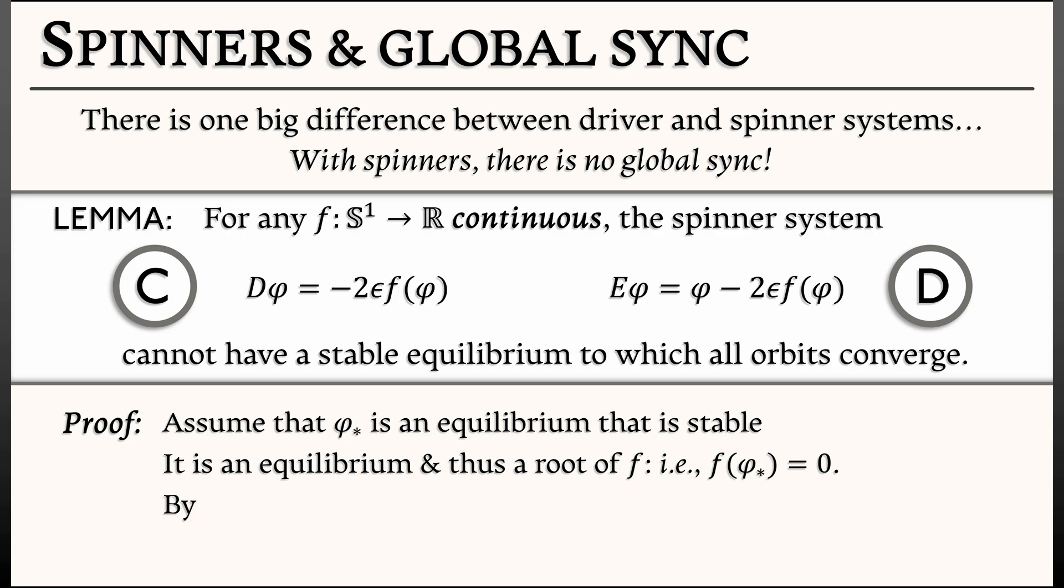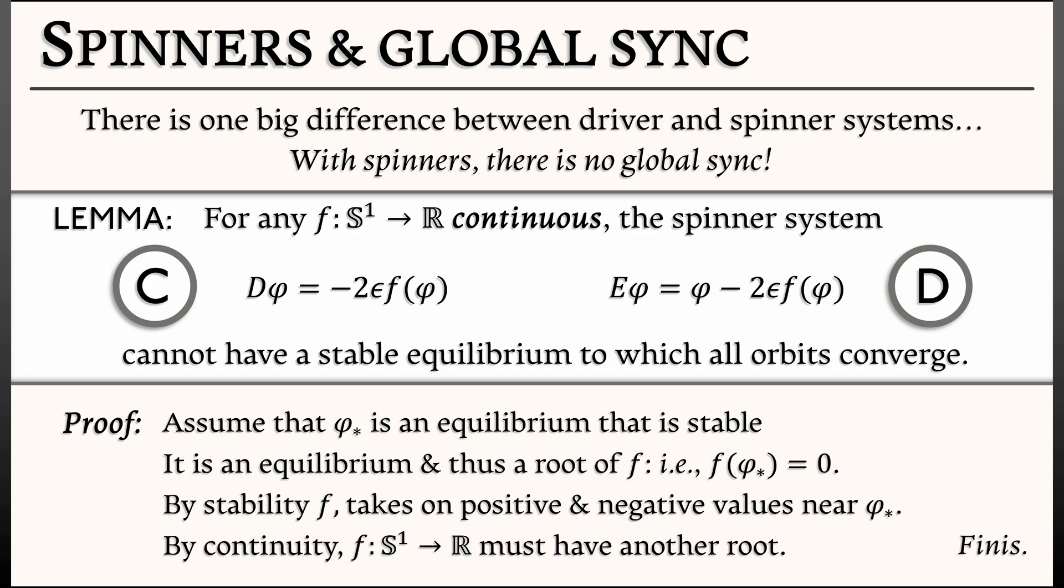But by stability, f has to take on both positive and negative values near that root. That's what stability means. But then, because this is a function from the circle to the reals, by continuity, there has to be another root where it goes from being positive back to being negative or vice versa. That other root is a different equilibrium—an unstable equilibrium. That means not everything can converge to that stable equilibrium, whether it's a synchronized state or not.